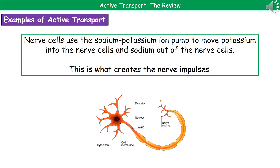Our second example is something we'll become more familiar with in B3 — nerve cells. Nerve cells have a special system called the sodium-potassium ion pump. This is vital to how our nerves actually work: it moves potassium ions into the nerve cells and sodium ions out of the nerve cells. That is literally what creates the nerve impulses that send information around our body. Without the sodium-potassium ion pump, this couldn't happen and we couldn't use nerves as a form of communication.